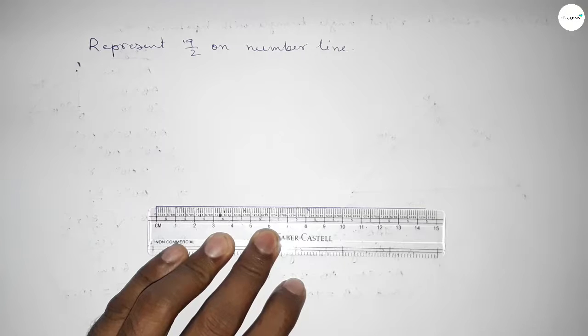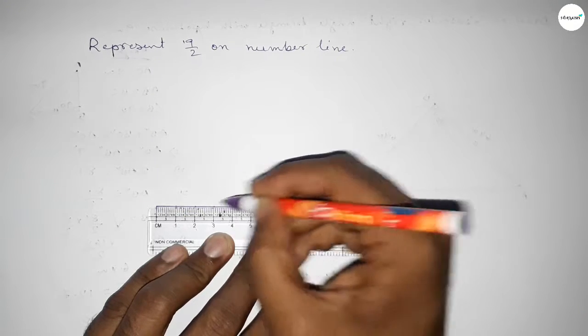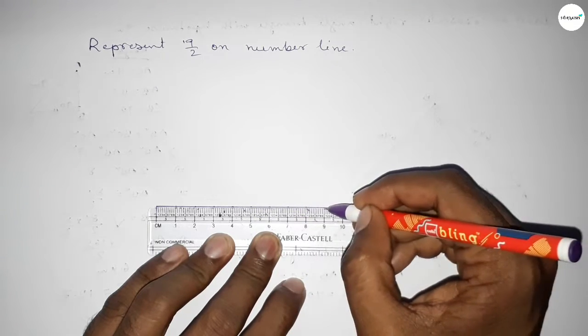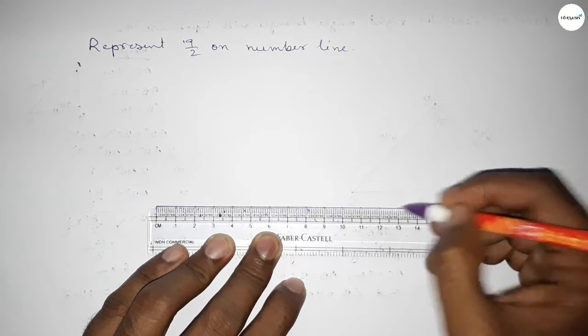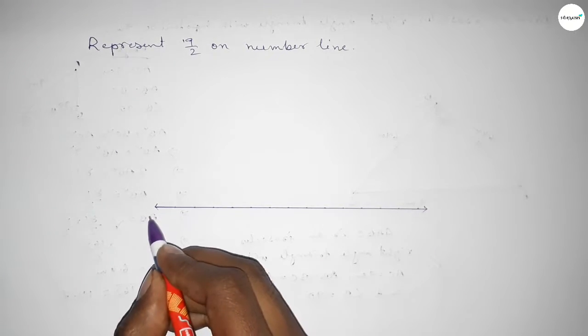Then marking the numbers on the line by using scale. So first marking the numbers on the line by this way. Next taking arrow mark here and arrow mark here.